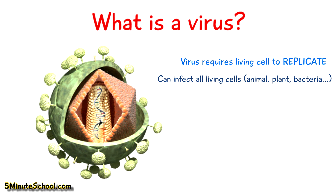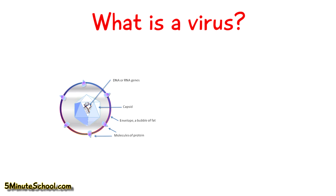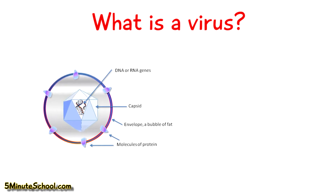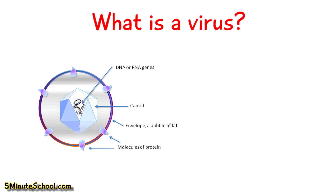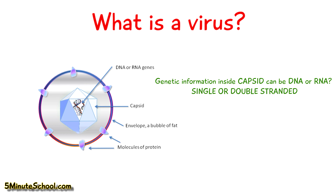Before we begin talking about how viruses infect cells, let's look at their structure first. There are actually six classes of viruses based on what's contained inside the protein coat — whether it contains a double or single strand of DNA, or a single or double strand of RNA. To simplify it, class 1 and 2 viruses contain DNA and class 3 to 6 contain RNA. Other components include the protein capsid, which contains the strands of genetic information, some enzymes inside, and the capsid is contained within an envelope which is a lipid membrane.